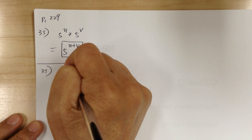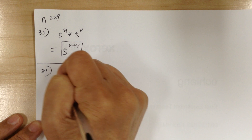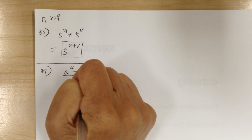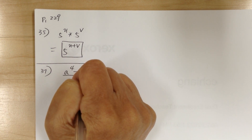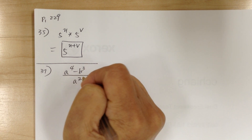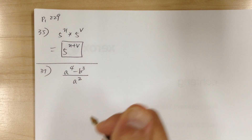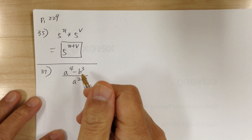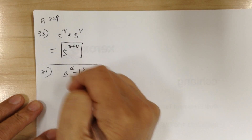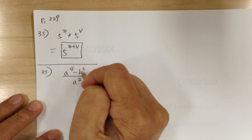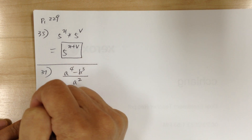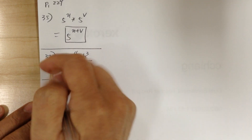You get a to the 4 minus b to the 3 over a squared. You cannot do anything to it unless you separate it. As a whole, because there's a b cubed term, you cannot combine anything. Just leave it.